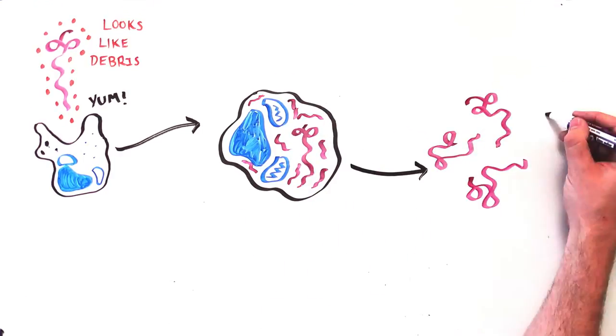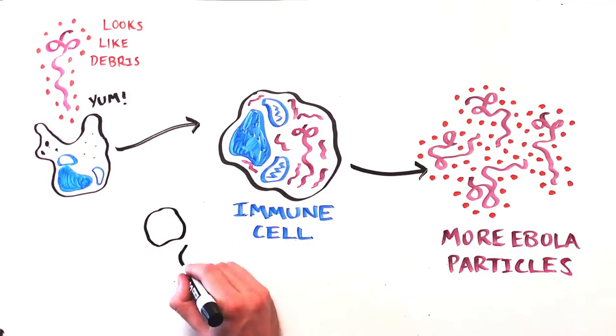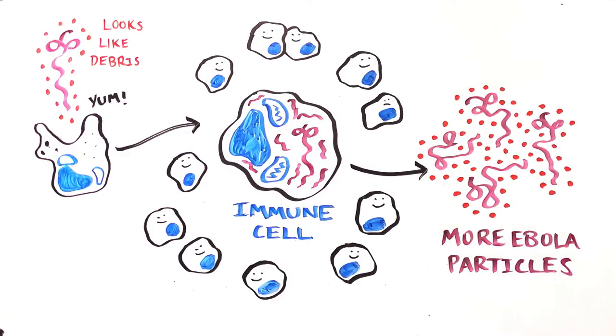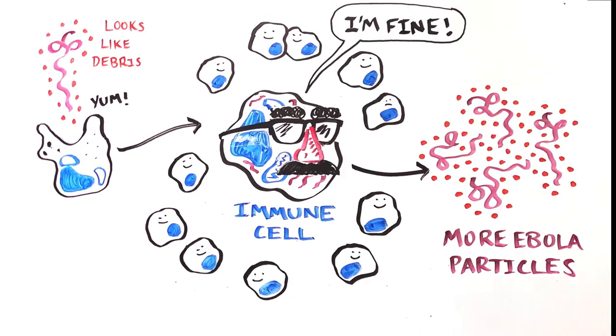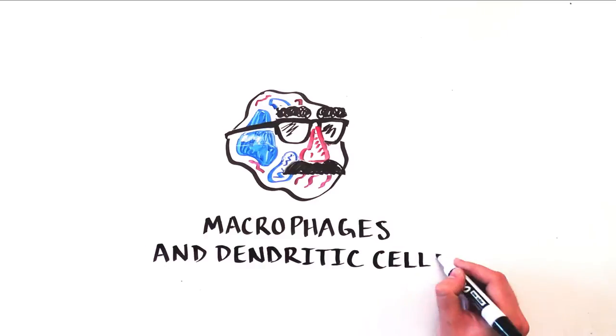It starts taking over the cell's machinery and produces more pieces of virus which get assembled and continue infecting as the cell dies. But that's not all. In addition to disguising itself to get into the cell, the Ebola virus also blocks the ability of the infected cell to tell other cells it's infected.